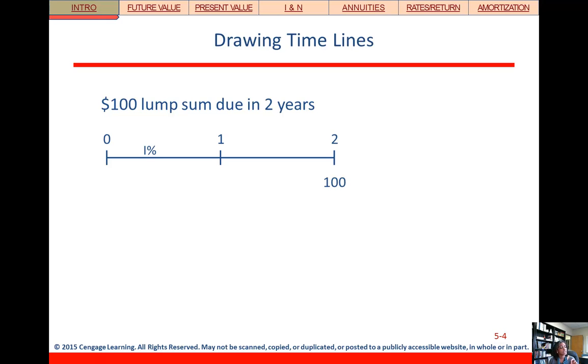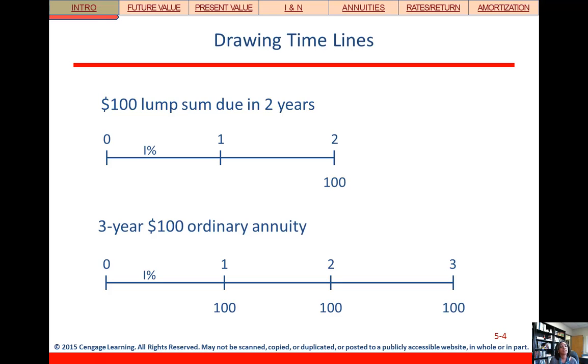And we tend to put the interest rate somewhere on our timeline. We don't know what it is yet, so we just have I percent for the interest rate. And then we're showing the cash flows at the bottom. So this is $100 due in two years. So we're going to put it underneath the two tick mark.